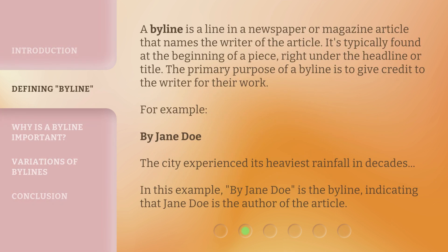A byline is a line in a newspaper or magazine article that names the writer of the article. It's typically found at the beginning of a piece, right under the headline or title. The primary purpose of a byline is to give credit to the writer for their work. For example, 'By Jane Doe' — 'The city experienced its heaviest rainfall in decades.' In this example, 'By Jane Doe' is the byline, indicating that Jane Doe is the author of the article.